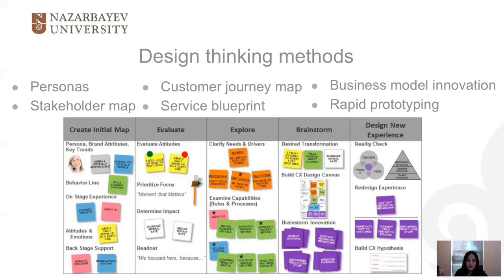The next one is the customer journey map, which describes a collection of touch points from the beginning to the end of a service delivery as seen from the customer's point of view. It helps with the identification of chances for service innovation and problem areas for service improvement.